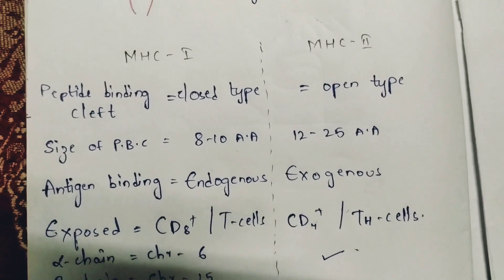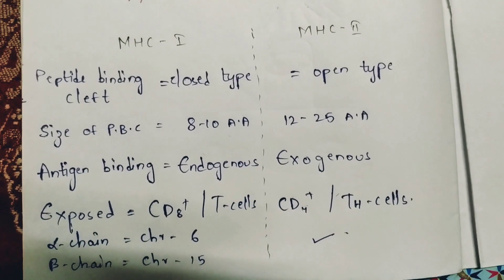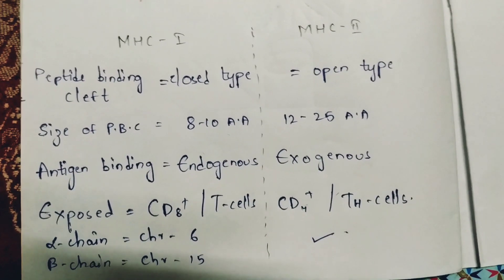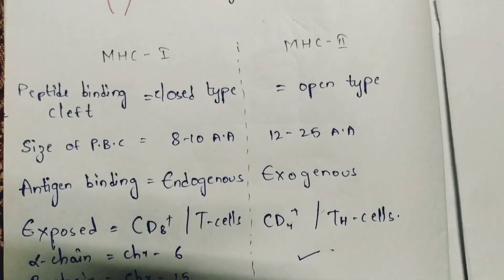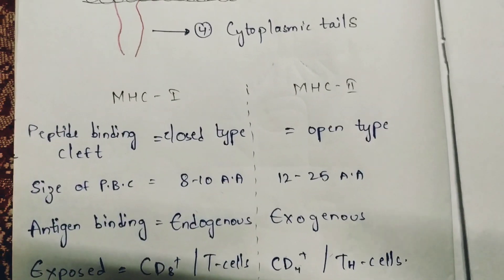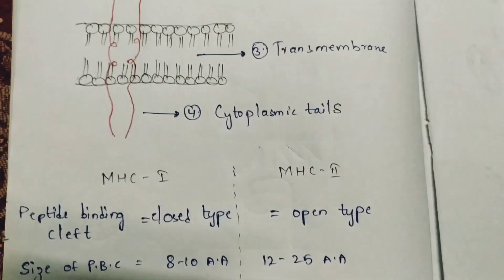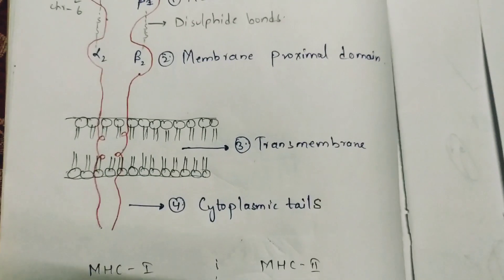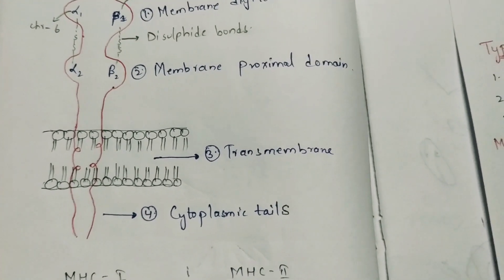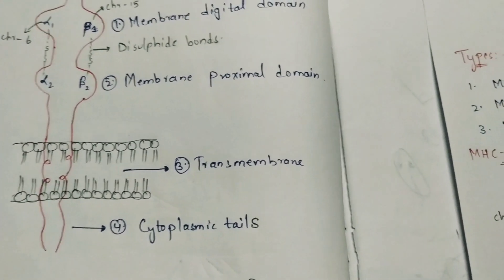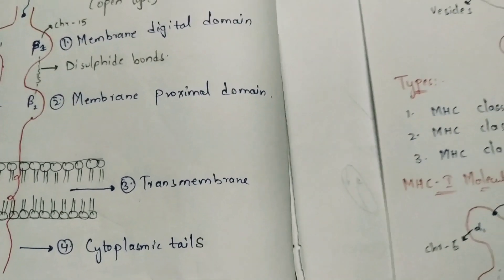So this is the explanation about the structures of MHC class 1 and class 2 and the MHC — Major Histocompatibility Complex — molecules overall.